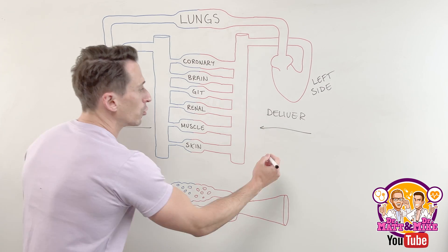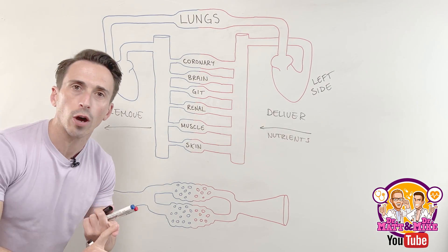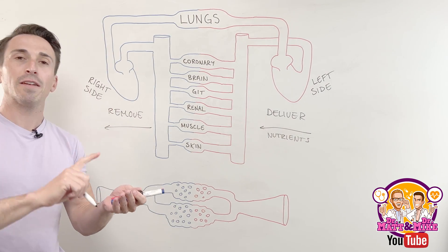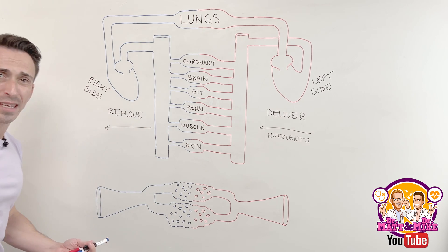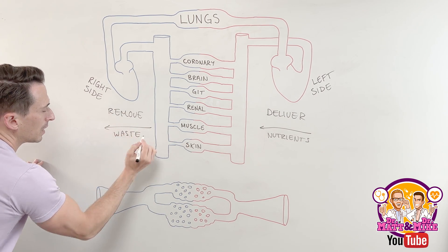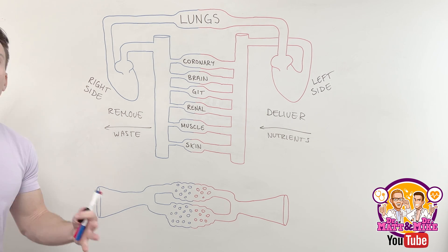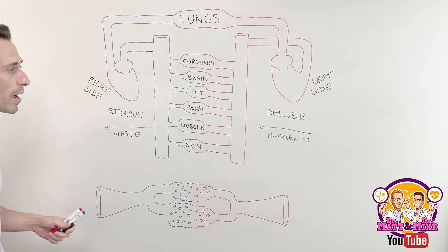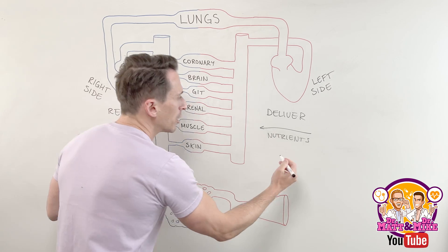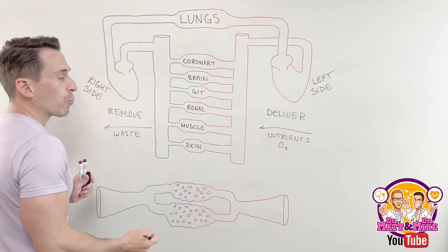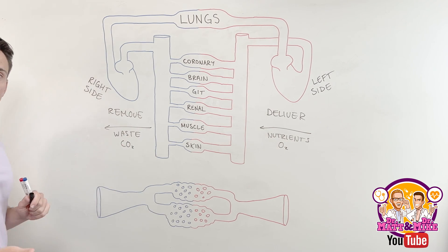One of the things that we are delivering is nutrients — in the form of glucose, amino acids, and fats, for example. What are we taking away? Well, we're going to be taking away waste. This waste can include things like ammonia and uric acid and a whole multitude of things that we no longer require. It's not just nutrients though; it's also gases that we're delivering. We're delivering things like oxygen and we're removing things like carbon dioxide, which is the exhaust of the cells.